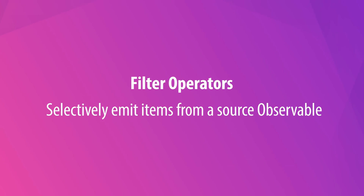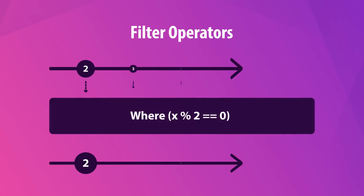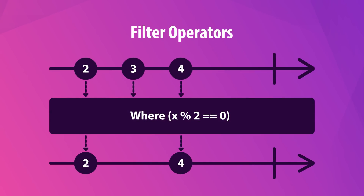Filter operators selectively emit items from a source observable. For instance, the where operator uses a predicate to choose which values to emit and which values to ignore.